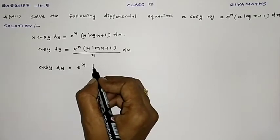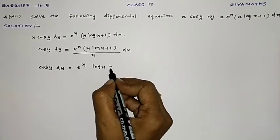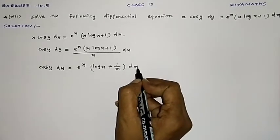x log x by x, x cancels. So only log x remains, plus 1/x dx.